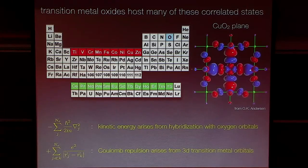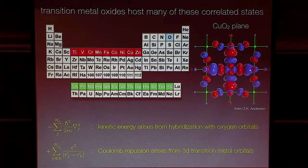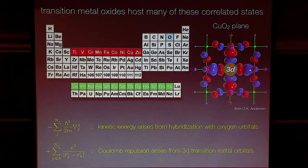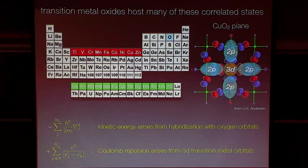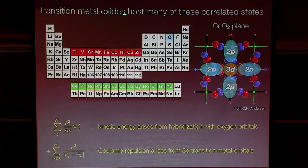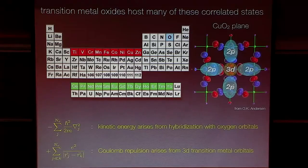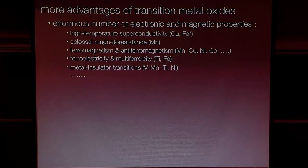Transition metal oxides are a very nice family of systems where these interactions are more or less on an equal footing. The large Coulomb repulsion comes from these 3D orbitals, which have a fairly small spatial extent and a relatively large Coulomb penalty to doubly occupy them. The electron kinetic energy term comes from the large, fat oxygen 2P orbitals, which provide a strong hybridization from site to site — the hopping is made possible by these oxygen 2P orbitals. So the oxide part provides the kinetic energy and the transition metal provides the large Coulomb interactions.